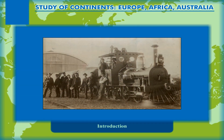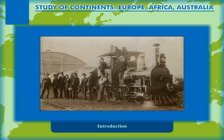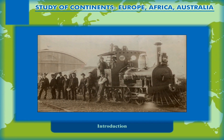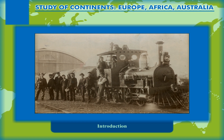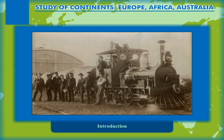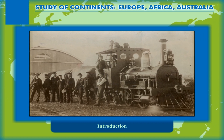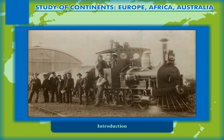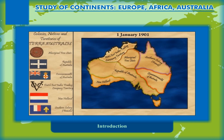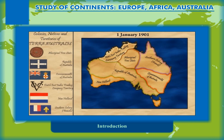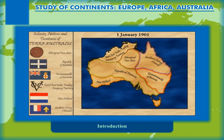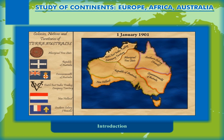The population grew steadily in subsequent decades, and by the 1850s, most of the continent had been explored, and an additional five self-governing crown colonies established. On 1st January 1901, the six colonies federated, forming the Commonwealth of Australia.